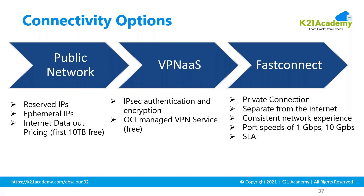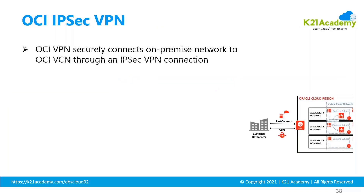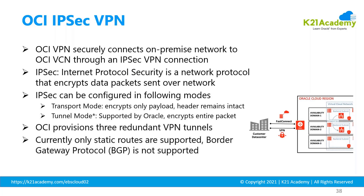Connectivity options: public network is the non-secure, over-the-internet option. VPN and Fast Connect are options for making encrypted or private connections between your on-premise data center and the cloud data center. IPSec VPN creates an encrypted tunnel between your data center and the Oracle data center, through which data is transferred — it goes over the internet but the data is encrypted. Static and dynamic routing are both supported for IPSec VPN.